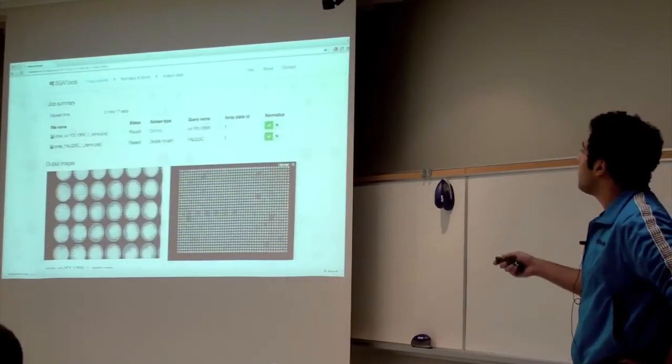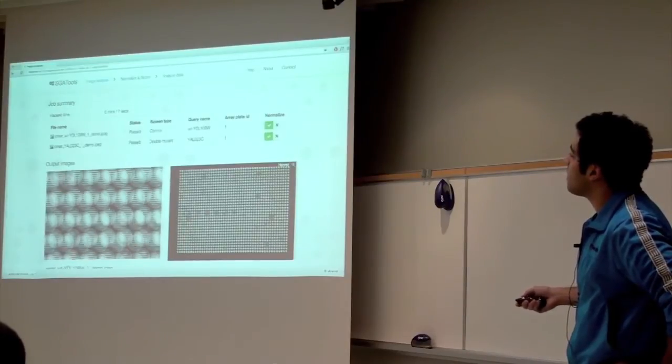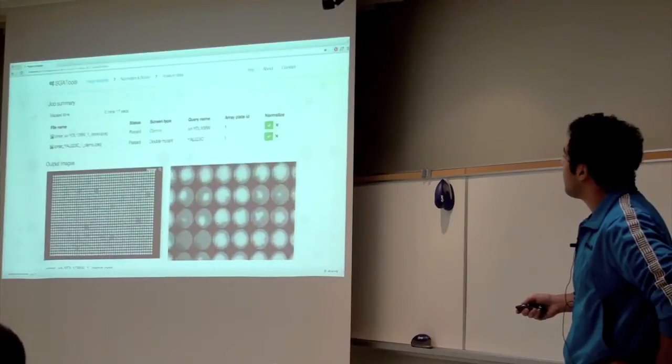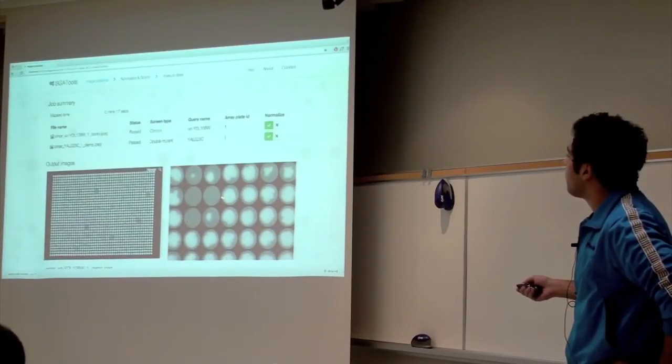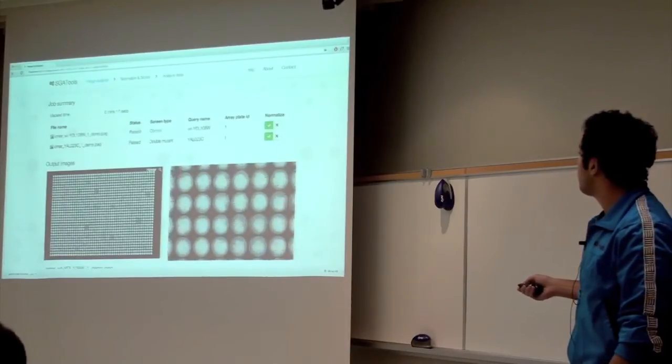You can also inspect the gridding that was done on your plate, so where the circles were placed around in case some sort of error happened or something. So you can kind of zoom into that and take a look. So what the image analysis software does is it quantifies the colony size by looking at the pixel intensities of your colonies.